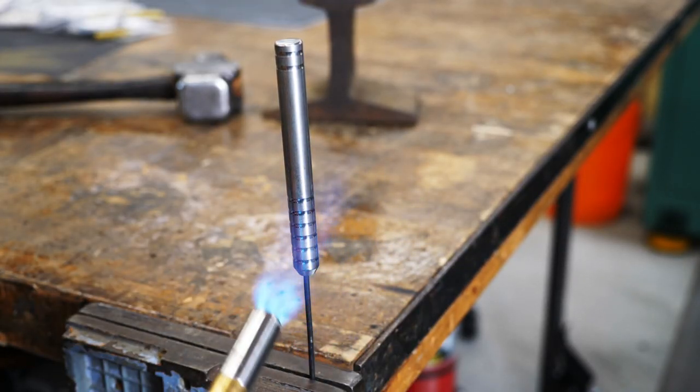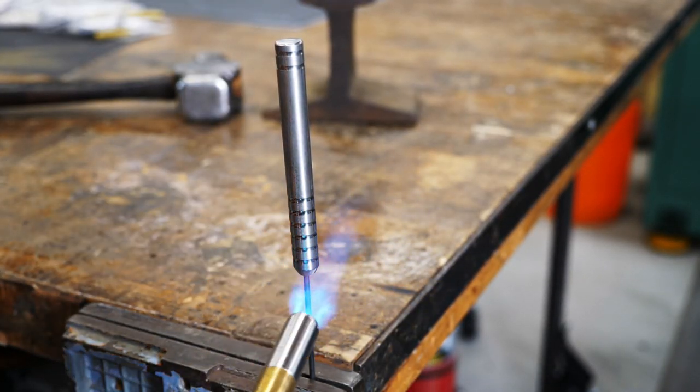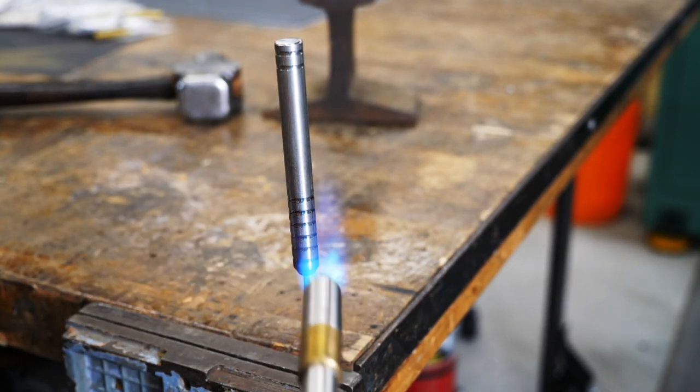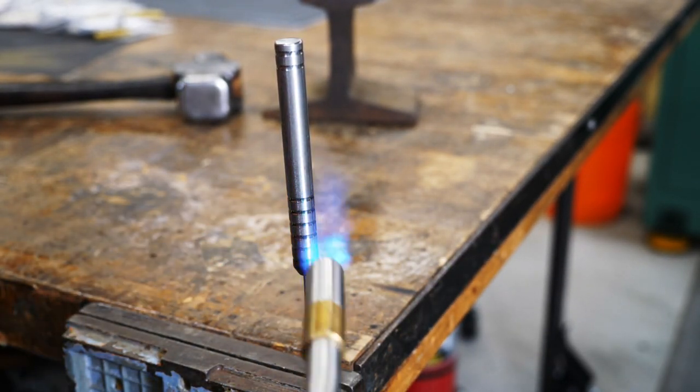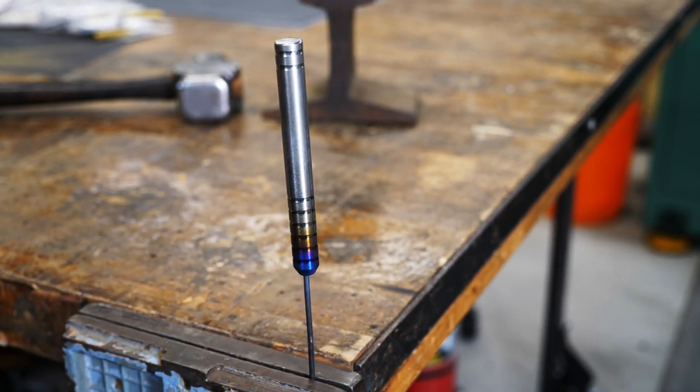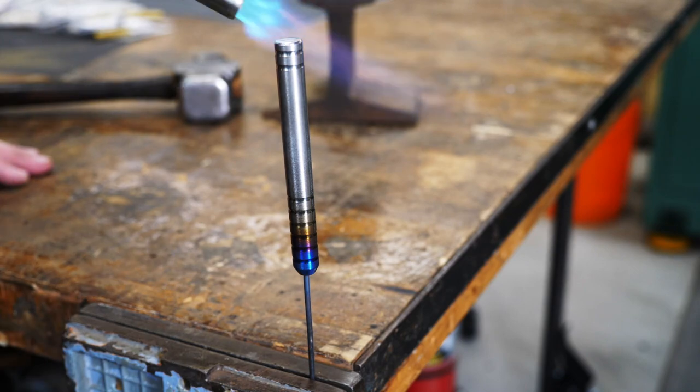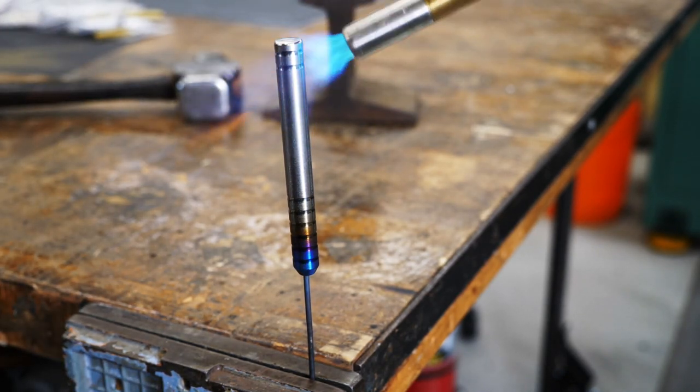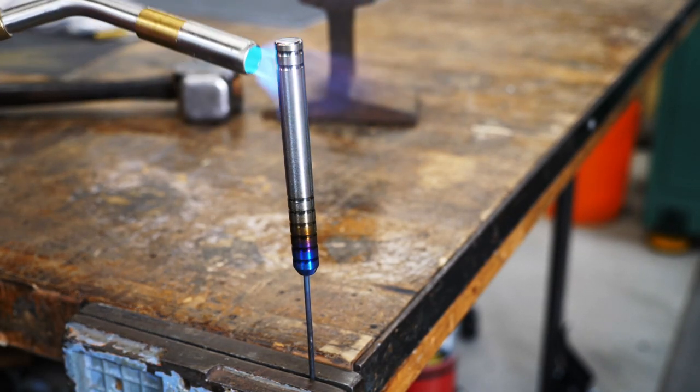When I'm flaming titanium, I like to focus the heat at the very tip. Once the color starts to show, I'll slowly blend it up and create a nice fade through the color spectrum. By doing all these things, you'll get a nice clean fade and your part will look great.